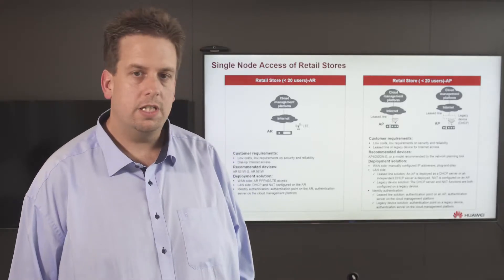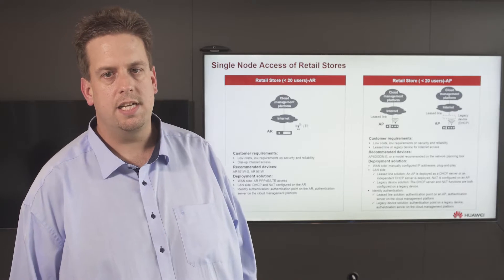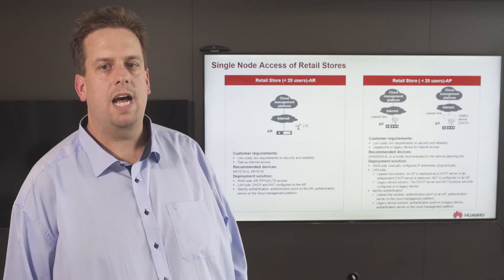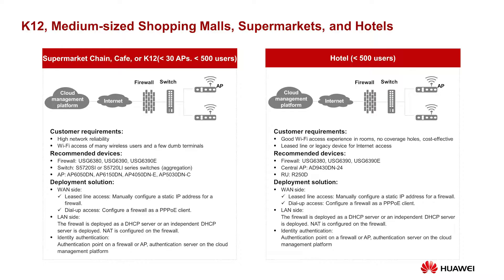Larger environments including firewalls, switches, and WLAN APs can also be deployed, managed, and operated with the Huawei Cloud Campus Solution — suited for medium-sized shopping malls, supermarkets, and offices. Combined with the distributed Wi-Fi solution, we can cover very complex environments like hotels and provide 100% Wi-Fi coverage with excellent user experience. The wide range of available components allows flexible and tailor-made network design for each requirement.